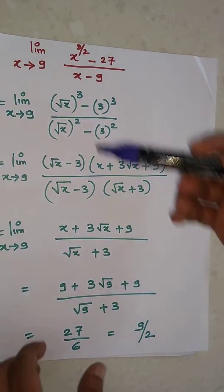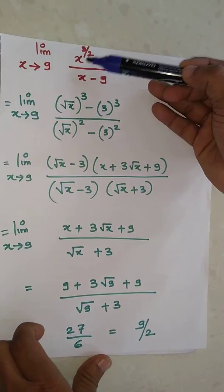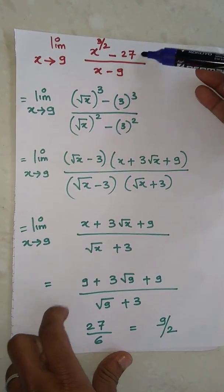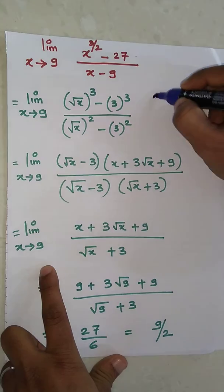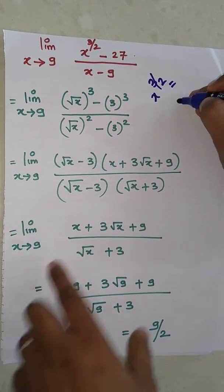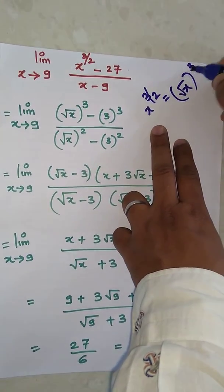Hello friends, today's topic is limits. We have limit as x tends to 9 of x raised to 3/2 minus 27 over x minus 9. Here we can write x raised to 3/2 as root x raised to 3.